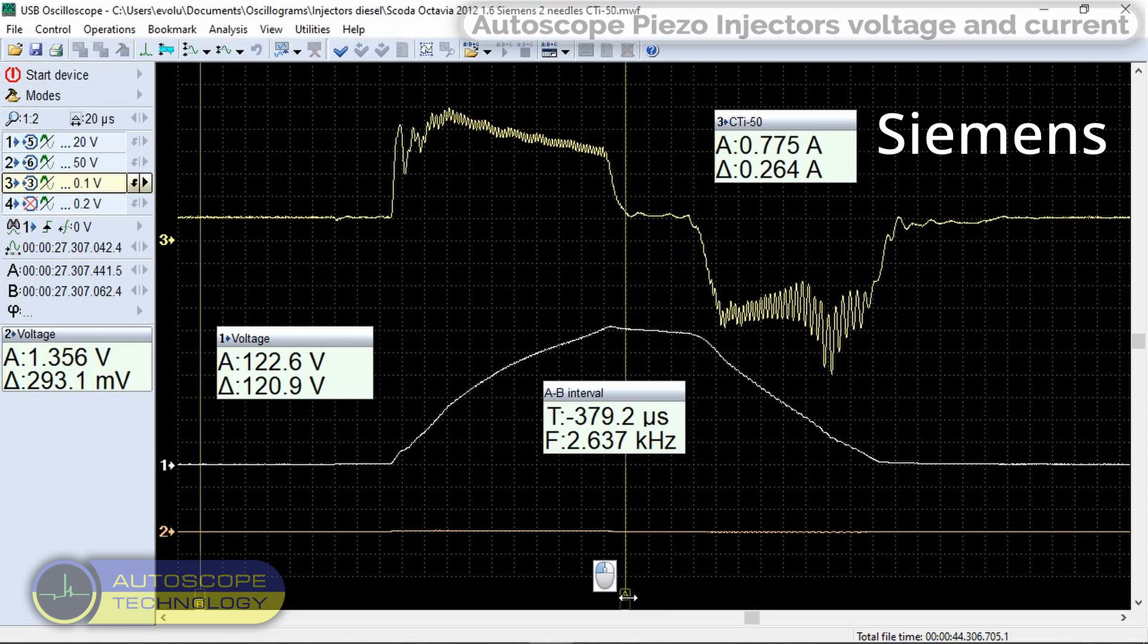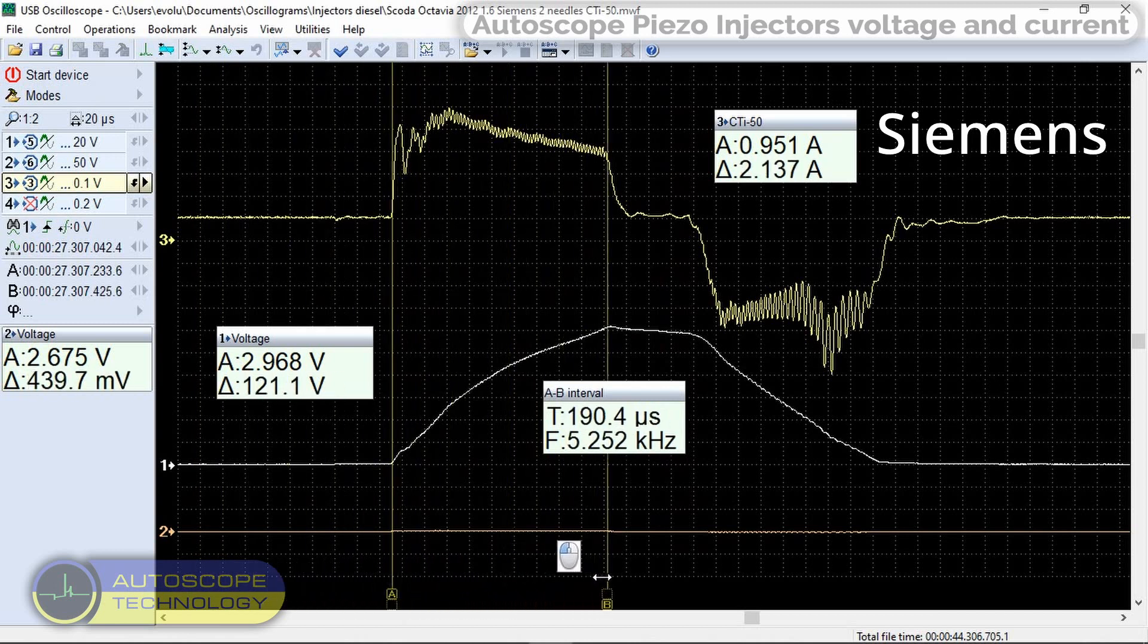Let's place the markers A and B and measure the duration of the control pulse. It is 270 microseconds.